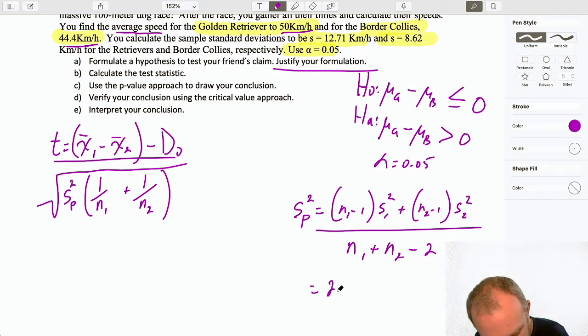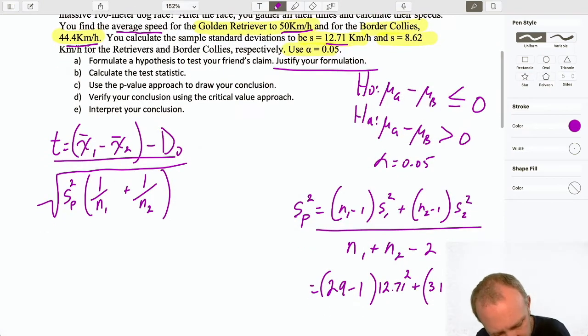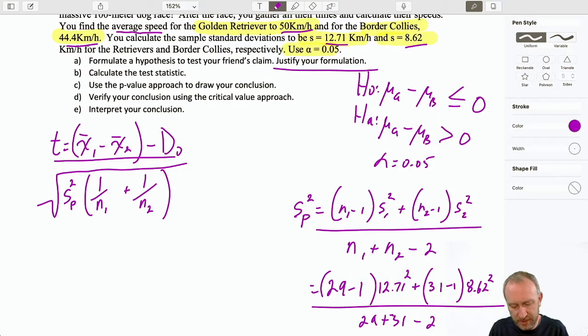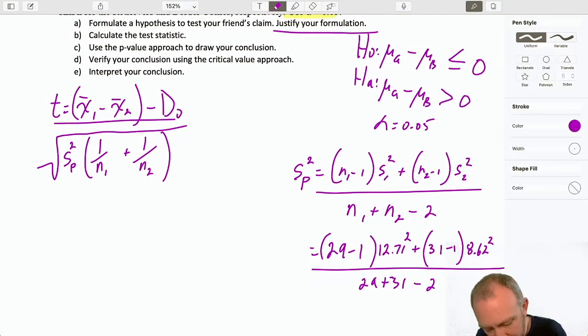So, if I put in our numbers, I have (29-1) times that first standard deviation, 12.71 squared, plus the next one was (31-1) times that standard deviation 8.62 squared, divided by 29 plus 31 minus 2. So, let's see what that gives us. 28 times 12.71 squared, plus 30 times 8.62 squared, divided by 29 plus 31 minus 2.